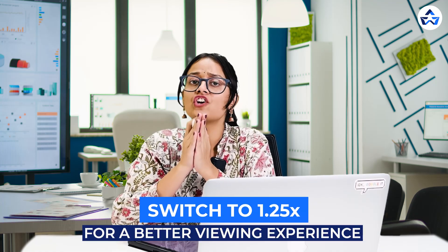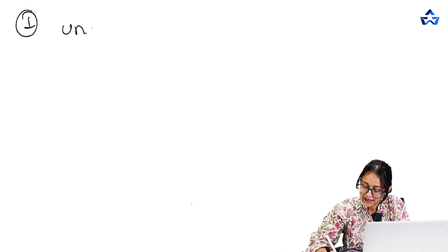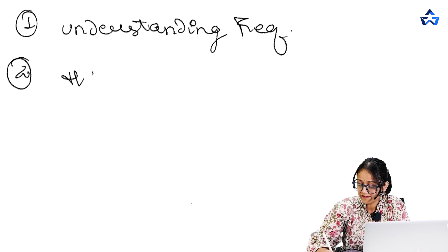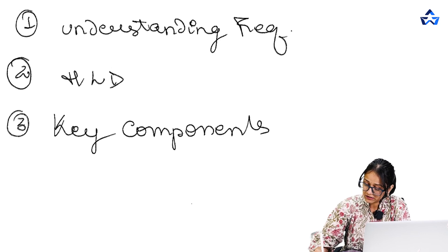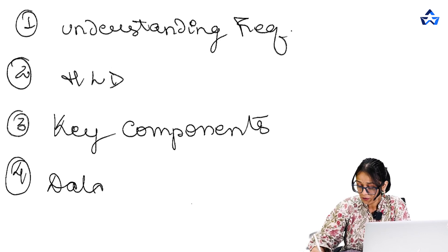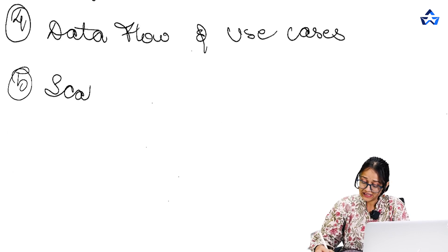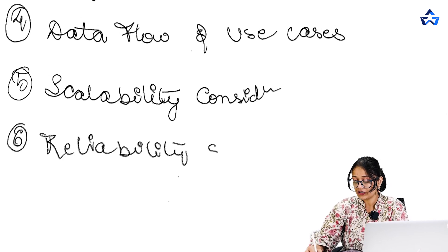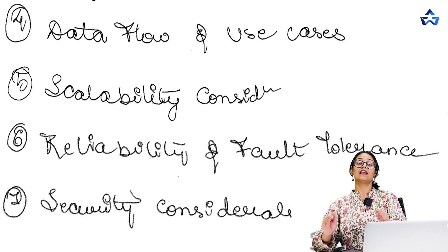Before moving ahead with the video, let's set an agenda for what the video will comprise of. We'll begin with the introduction of what system design is, then move ahead by understanding the requirements of system design. Then we'll discuss high-level design, key components of system design, data flow and use cases. After that, we'll cover scalability considerations, reliability and fault tolerance, and security considerations, and lastly we'll sum up the video.